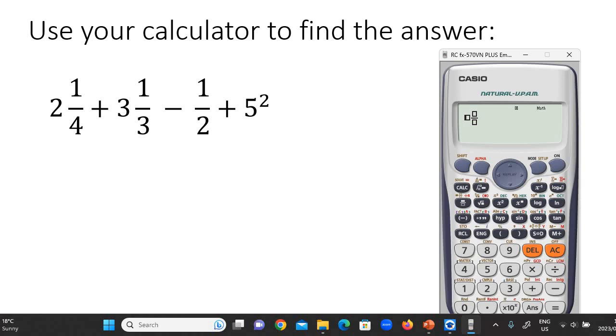I don't know if you can see that. That shows you what the second option is if you press shift. Now you can go press 2 and 1/4 and then plus and then use that one again and then 3 and 1/3 and then minus. Now we can just use a normal fraction 1/2 and then plus 5 to the power of 2 like that.